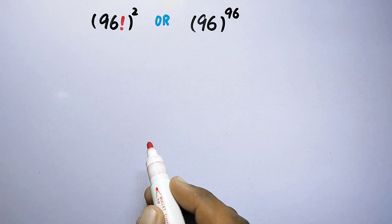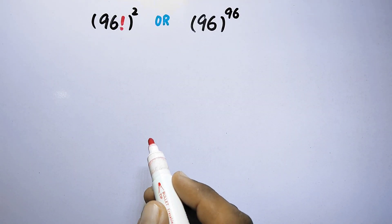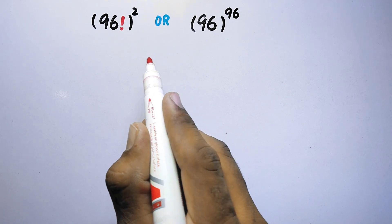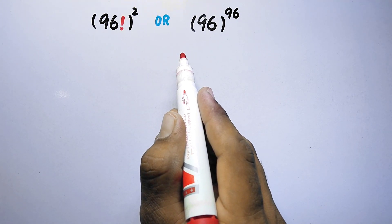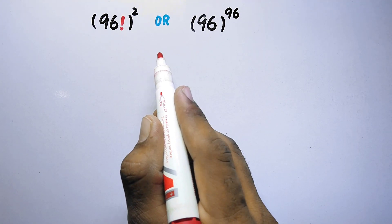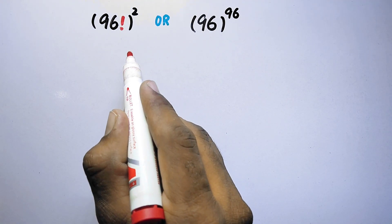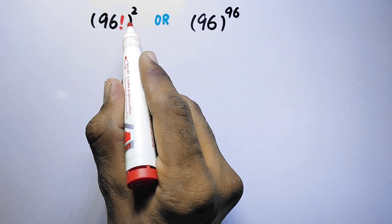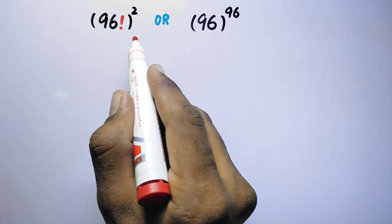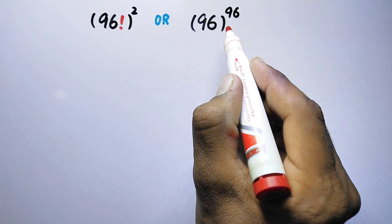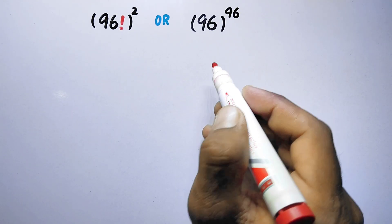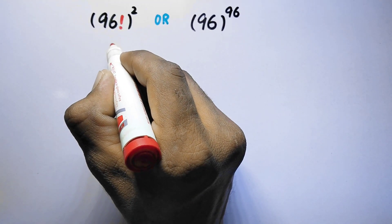Hello everyone and welcome to Explode Maths. In this video, we are going to compare two very large numbers and find which one is larger: 96 factorial to the power square, or 96 to the power 96. So let us see the solution.